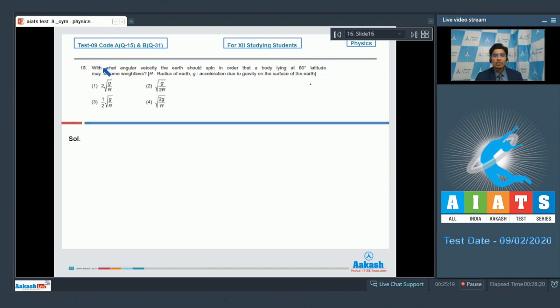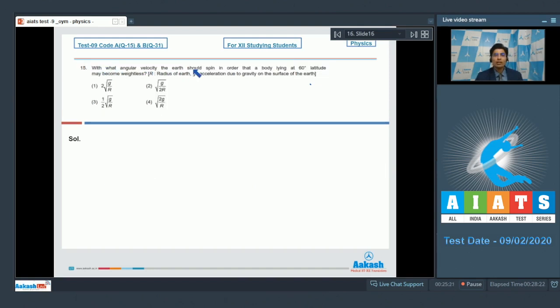Now, let us solve question number 15. Question 15 says, with what angle of velocity the earth should spin in order that a body lying at 60 degree latitude may become weightless? R is the radius of earth. G is the acceleration due to gravity on the surface of earth.